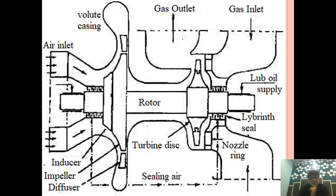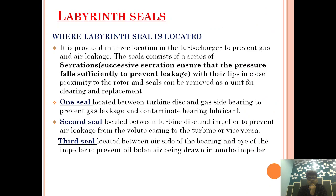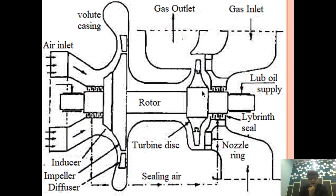Labyrinth seals are provided in three sections: one is between the compressor and the air side lubrication system; second, between the turbine side and the turbine side lubrication system; and third, in the self-lubrication system between the compressor and the turbine side. One seal is located between the turbine side and the gas side bearing.